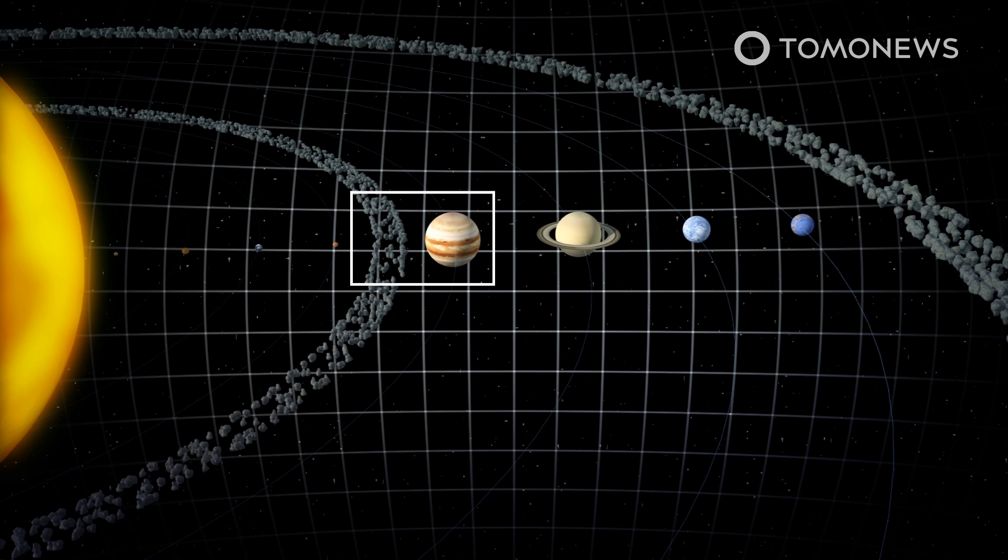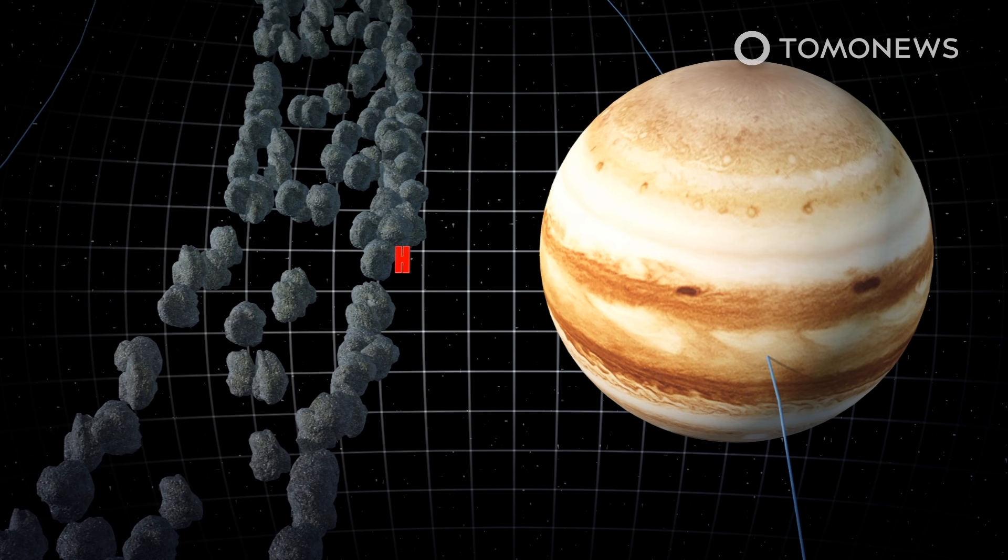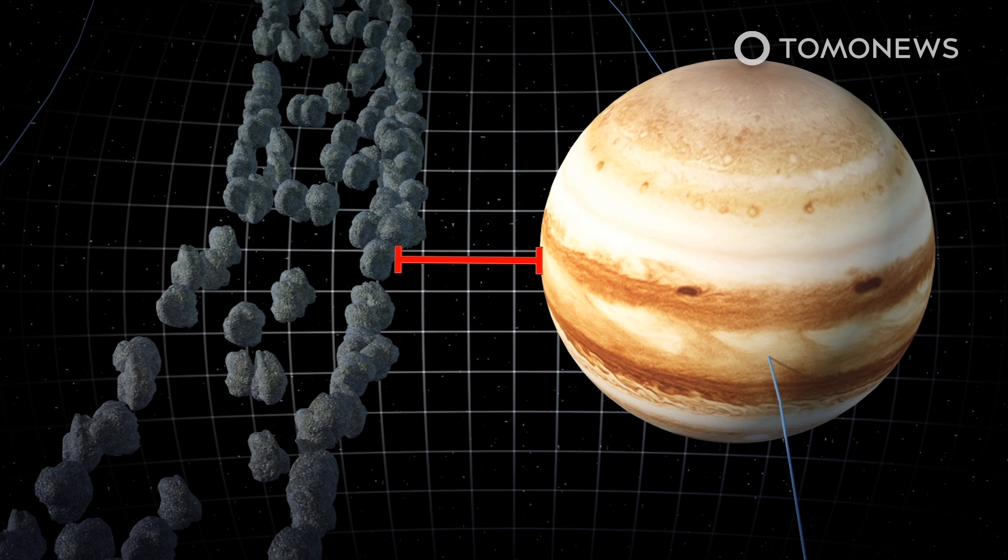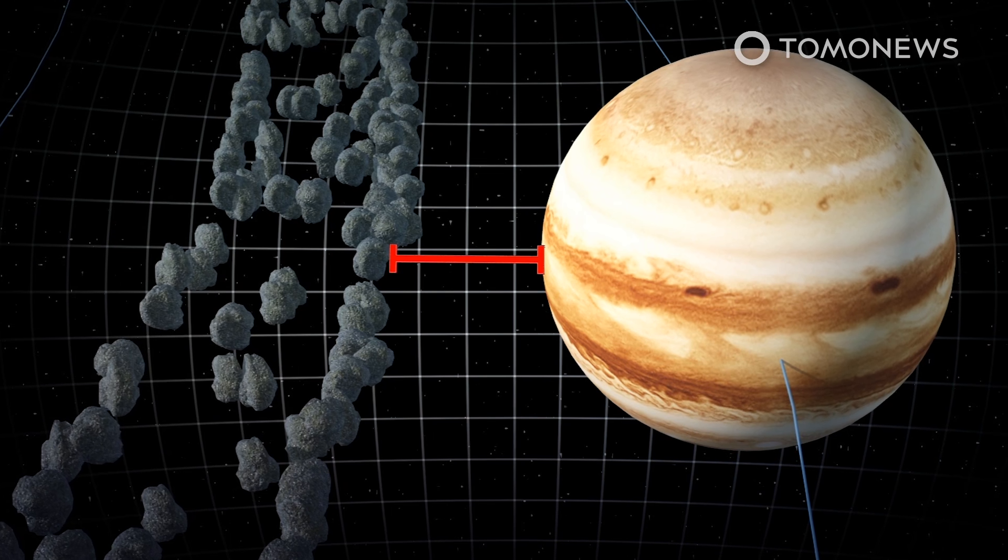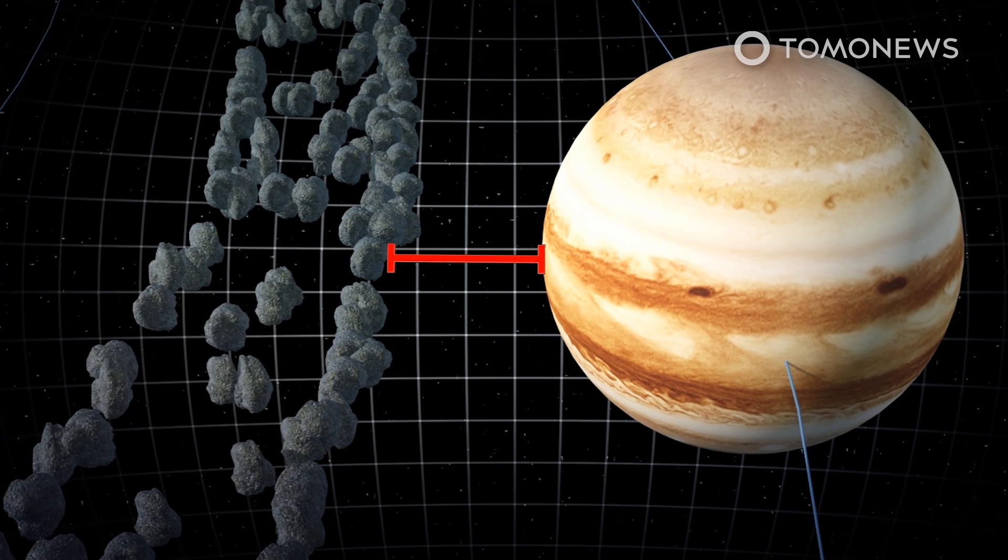A separation known as the Great Divide splits the rocky planets and the gas planets in our solar system. According to the latest paper published in Nature Astronomy, researchers can now explain how the divide came to exist.